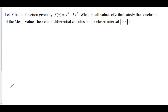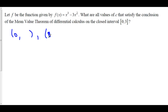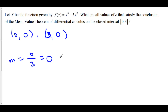Let f be the function given by f(x) equals x cubed minus 3x squared. What are all values of c that satisfy the conclusion of the mean value theorem on the closed interval from 0 to 3? We want to find all values of c such that the derivative equals the average rate of change from 0 to 3. Plugging in: f(0) equals 0, and f(3) equals 27 minus 27, which is also 0. So the average rate of change is 0 over 3, which equals 0.